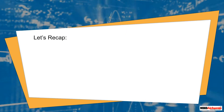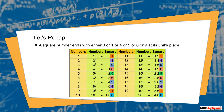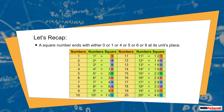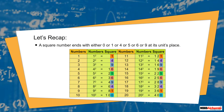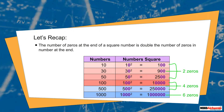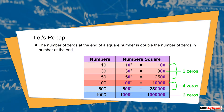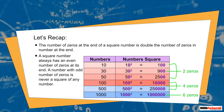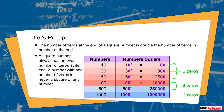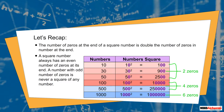Let us recap. A square number ends with either 0, or 1, or 4, or 5, or 6, or 9 at its unit's place. The number of zeros at the end of a square number is double the number of zeros in the number at the end. A square number always has an even number of zeros at its end, and a number with an odd number of zeros is never a square of any number.